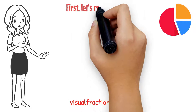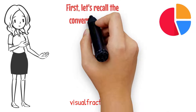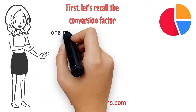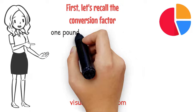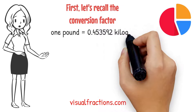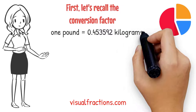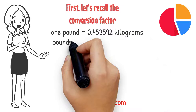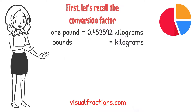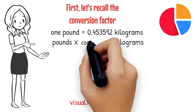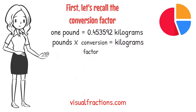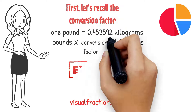First, let's recall the conversion factor. 1 pound is approximately equal to 0.453592 kilograms. To convert pounds to kilograms, you simply multiply the number of pounds by this conversion factor.